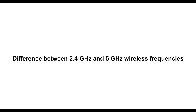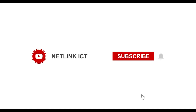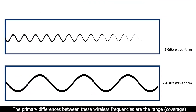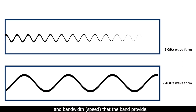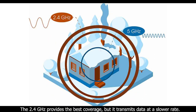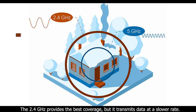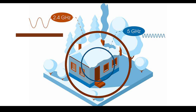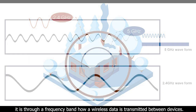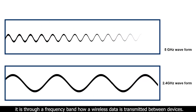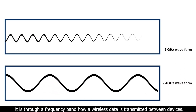The primary difference between 2.4 gigahertz and 5 gigahertz wireless frequencies is the range and bandwidth that each band provides. The 2.4 gigahertz band provides the best coverage but transmits data at a slower rate. The 5 gigahertz band provides less coverage but transmits data at faster speeds. It is through a frequency band that wireless data is transmitted between devices.